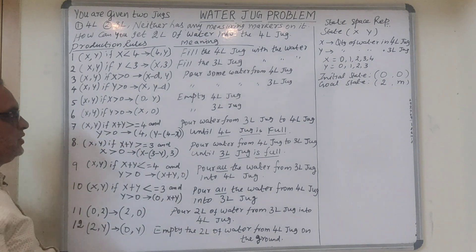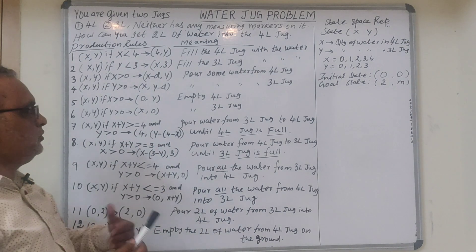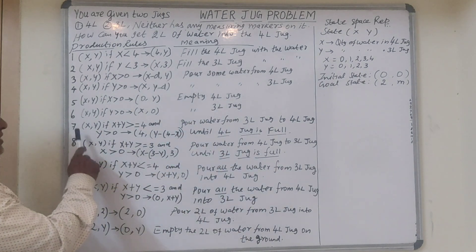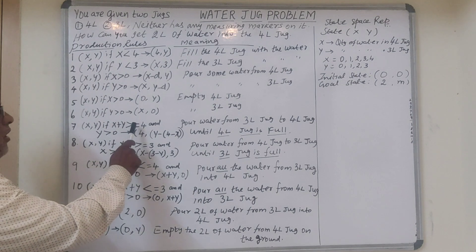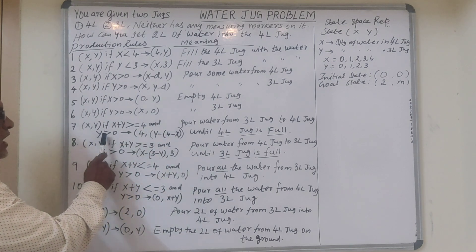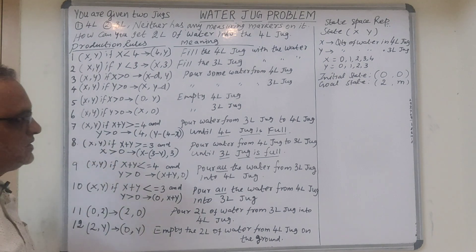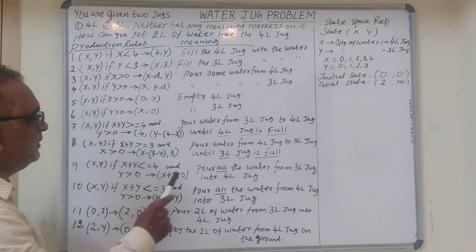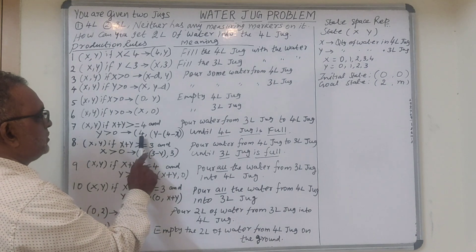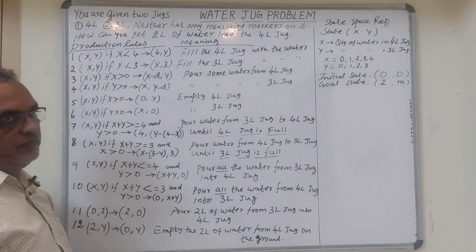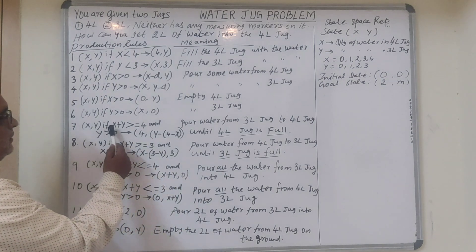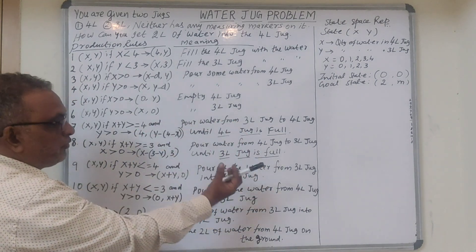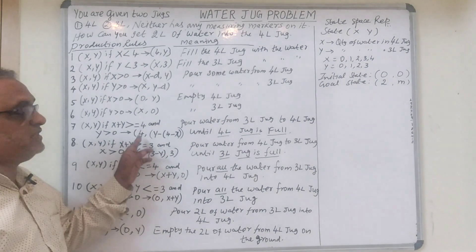Rule 5: if Y is greater than 0, X comma 0 — it implies remove the entire water from the 3-litre jug, emptying it. Rule 7: X comma Y — if X plus Y is greater than or equal to 4 and Y is greater than 0, this implies pour water from the 3-litre jug into the 4-litre jug until the 4-litre jug is full. Initially the 4-litre jug may contain some water, but you transfer water from the 3-litre jug until the 4-litre jug is full.